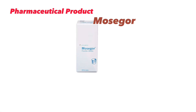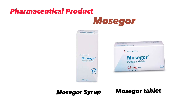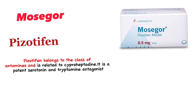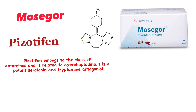Pharmaceutical product Mosegor — Mosegor syrup and Mosegor tablet. Mosegor contains pizotifen as active ingredient. Pizotifen belongs to the class of antihistamines and is related to cyproheptadine. It is a potent serotonin and tryptamine antagonist.